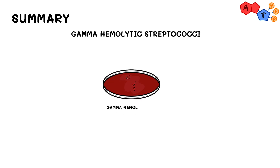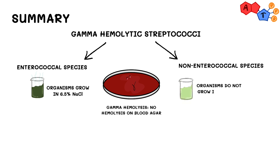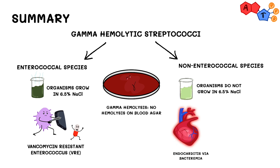Let's have a quick review of the high yield points. Gamma hemolytic streps show no hemolysis on blood agar. They're divided into two groups: enterococcal, which grows in 6.5% sodium chloride, and nonenterococcal, which does not. The main concern with enterococcal species is vancomycin resistant enterococci, or VRE. For streptococcus bovis, remember that it causes endocarditis and has a strong association with colon cancer.